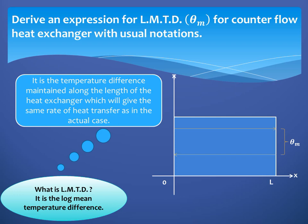Let us try to understand the meaning of log mean temperature difference in the case of a counter-flow heat exchanger. In a counter-flow heat exchanger, one fluid flows in one direction and the other flows in the opposite direction. Log mean temperature difference is the constant temperature difference, known as theta_m or LMTD, which if maintained constant along the length of the heat exchanger will give the same rate of heat transfer as in the actual case.